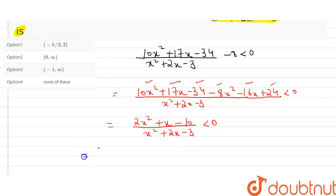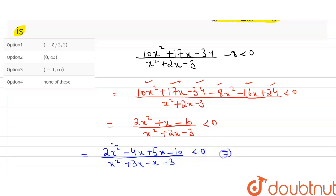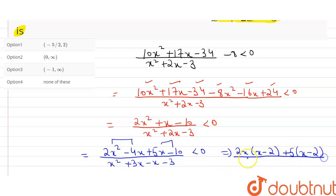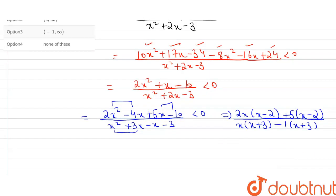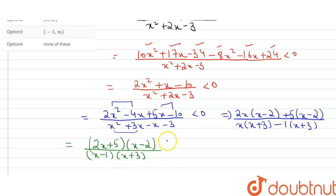The numerator 2x² + x − 10 can be factored as (2x + 5)(x − 2). The denominator x² + 2x − 3 factors as (x + 3)(x − 1). So the inequality becomes (2x + 5)(x − 2) / [(x − 1)(x + 3)] < 0.